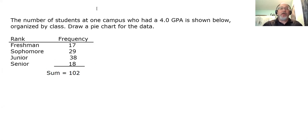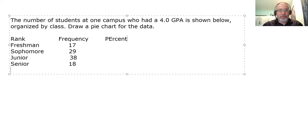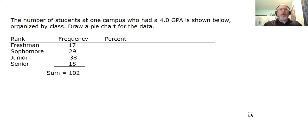So 102 people were surveyed. But we need to know what percent of the people were freshmen, sophomores, juniors, and seniors. So I'm going to take this table, and I'm going to add a couple of columns to it. And one of the columns is going to be percent. You'll see what the next column is when we get to step two.